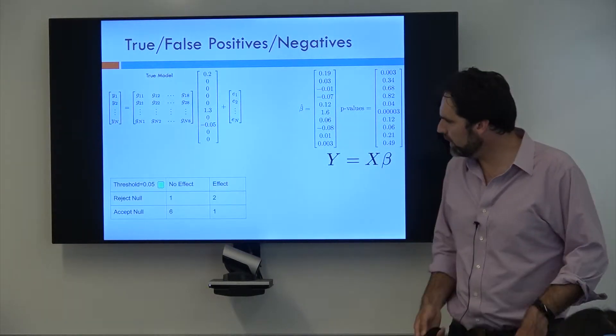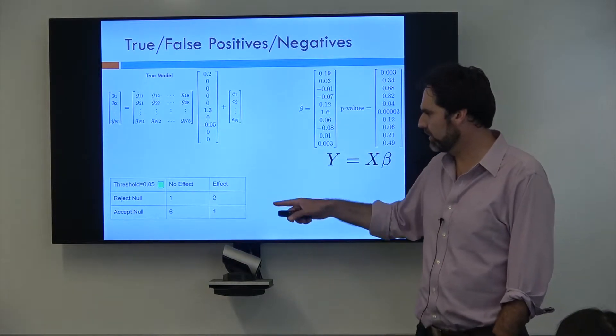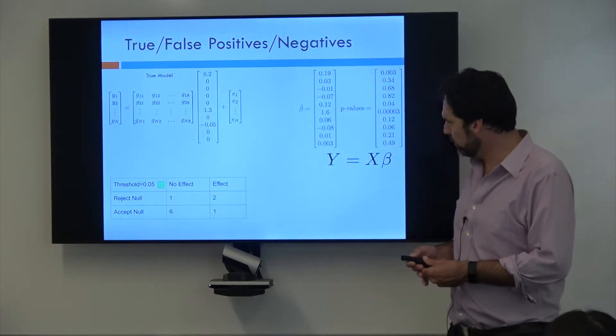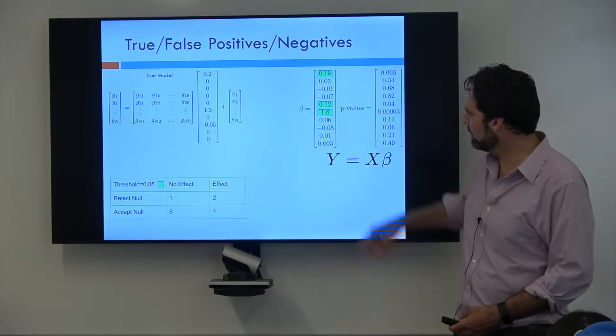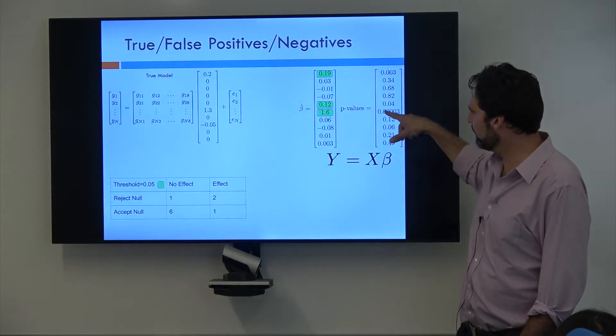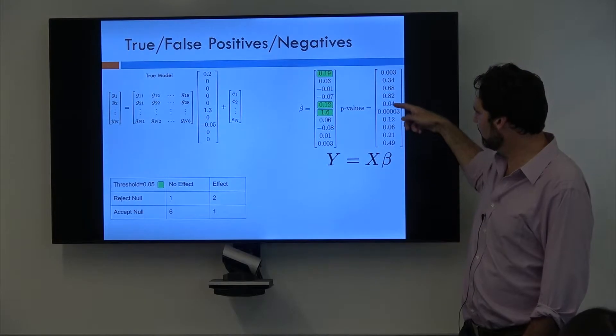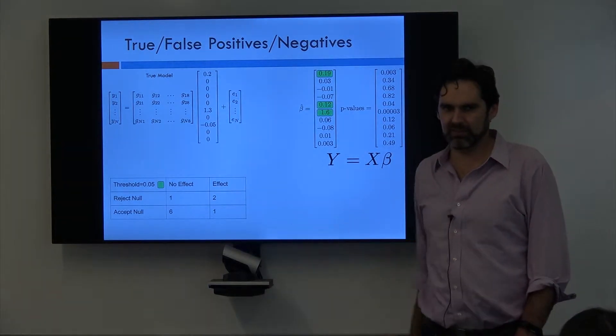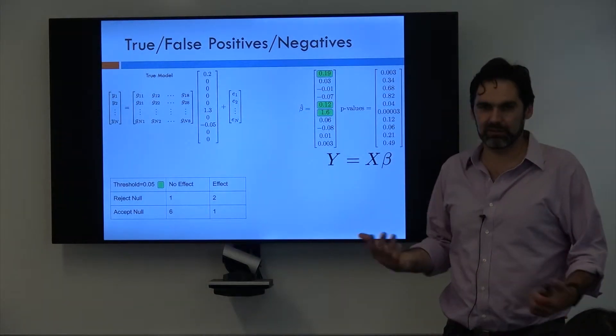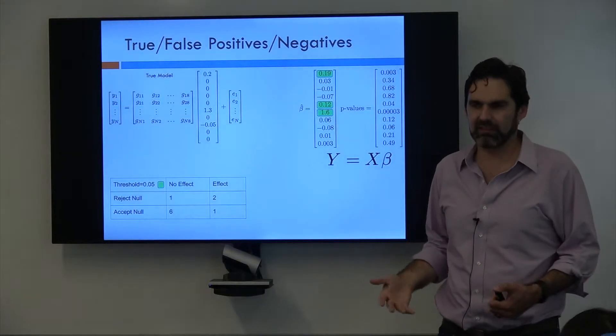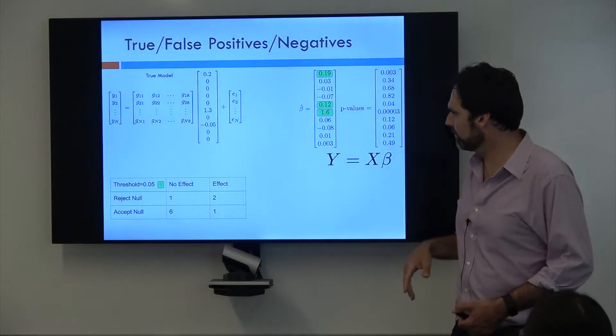So if we use a threshold of 0.05, we can look at the guys, the betas that we have, and we can look at this corresponding p-values. And okay, these three had p-values that were less than 0.05. And so we're going to say those are significant. We're going to reject the null and assume some sort of alternate.